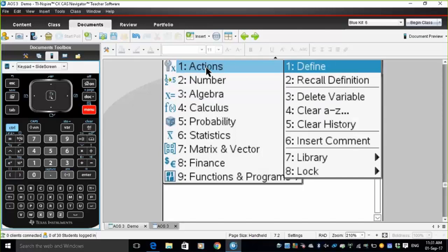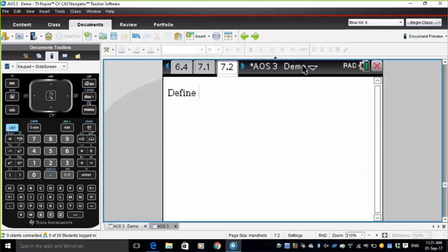Menu, actions, define f1 of x equal to 9 minus x squared.